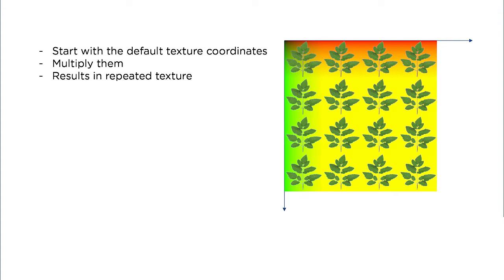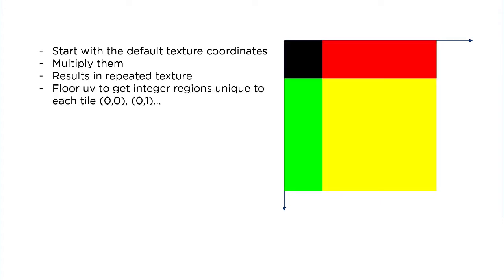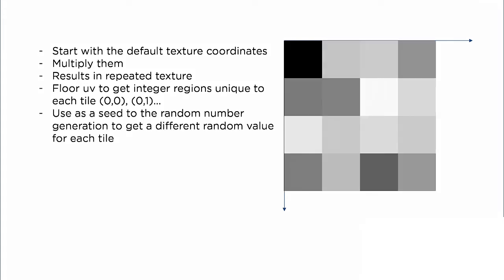Then, we'll use a floor operation to get whole integer regions. These integer values will be unique to each tile, which means that we can use it as a seed into a random value generator function.